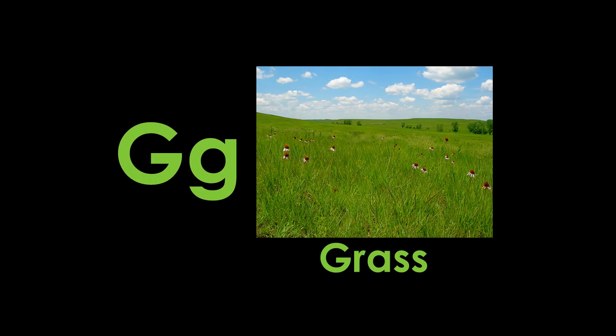G is for grass. At one time, native prairie grasses like those in this picture covered most of Kansas and the Great Plains. It fed wild animals like bison, deer, and antelope, and later fed domestic animals like cattle, sheep, and goats. Today, the Flint Hills of Kansas is one of the last remaining pieces of native prairie grass in the whole United States.